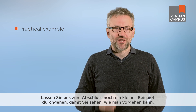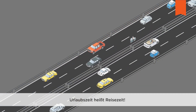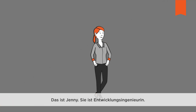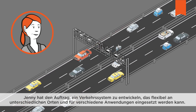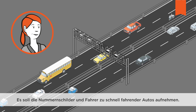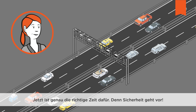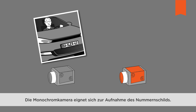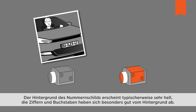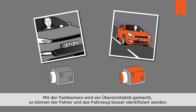There are several criteria that help to determine which interface is right. Let's go through one small example to show how you can approach things. Vacation season means lots of people on the roads. Meet Jenny, a development engineer. She has been tasked with developing a speed monitoring system that can be deployed flexibly in various places and applications. The system should provide images to identify the license plates and drivers of speeding cars. Jenny needs two cameras — one monochrome, one color. The monochrome camera takes the image of the license plate, where numbers and letters are designed to stand out against a light background. The color camera is used to take a wider picture, allowing for clear identification of the driver and vehicle.